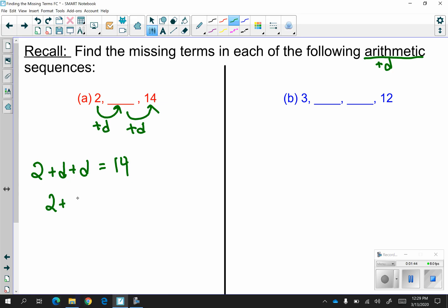In other words, we're starting with 2, we made 2 jumps, and we got 14. And now you have an equation that you can easily solve. So you get 2d is equal to 12, and then your common difference has to be 6.